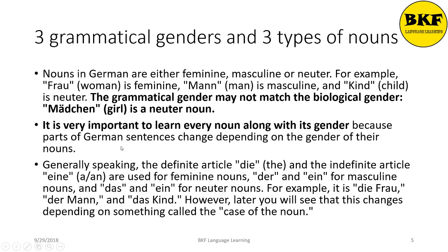Because parts of German sentences change depending on the gender of the nouns. So generally speaking, the definite article die and the indefinite article eine, which means 'a' or 'an,' are used for feminine nouns. Whereas der and ein for masculine nouns, and das and ein for neuter nouns. So for example, it is die Frau, der Mann, and das Kind.